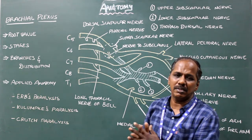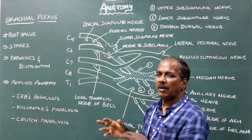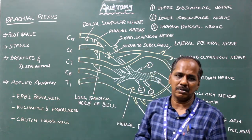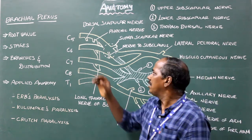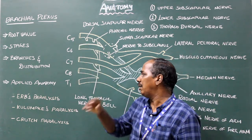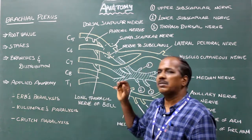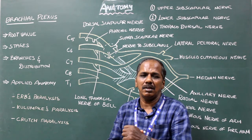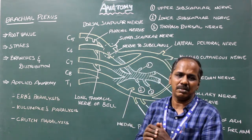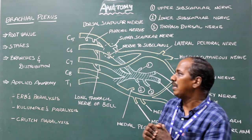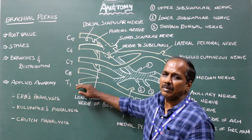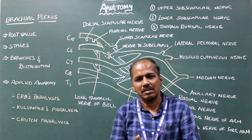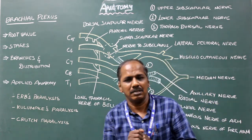Root stage. It is formed by the anterior primary rami of C5 to T1 spinal nerves. Sometimes C5 is absent and T2 joins to form the brachial plexus — this is known as post-fixed plexus. In some cases T1 is absent and T4 takes part, forming the pre-fixed brachial plexus.